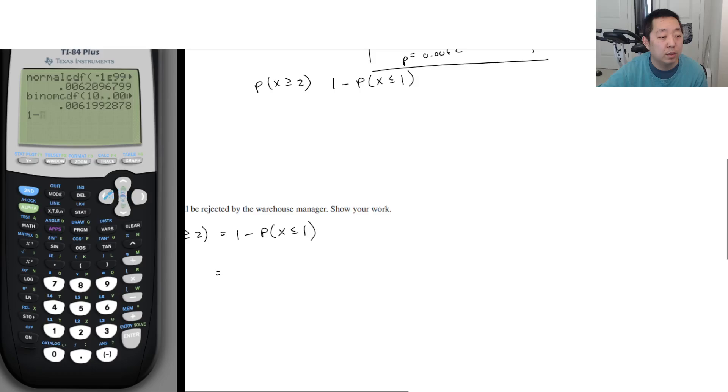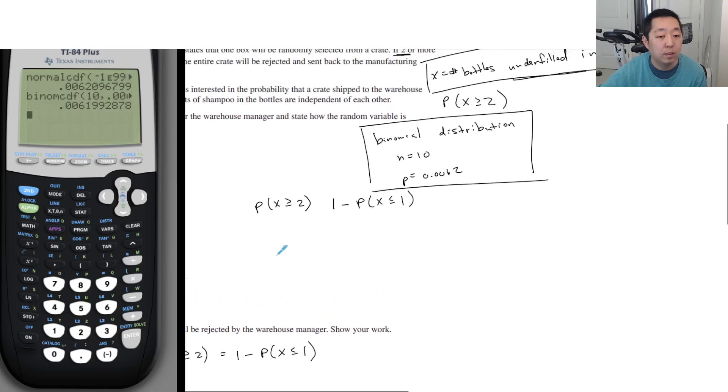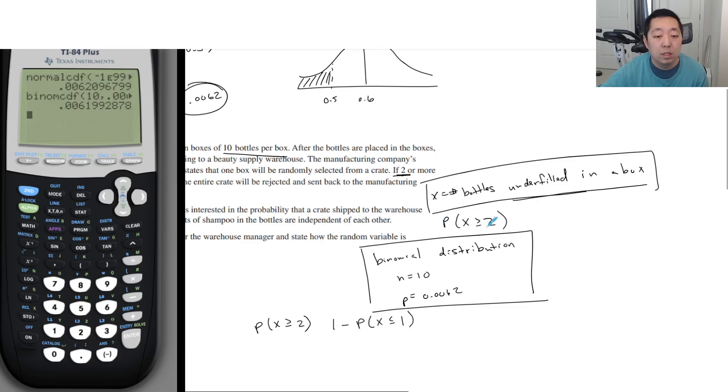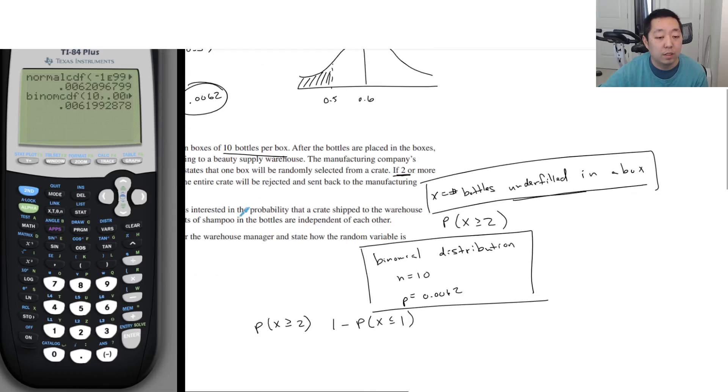Wait, no, I did that wrong. P is the number of boxes that are underfilled. Wait, why did that come out so small? It should be really large, very likely that it's zero. I do one minus that. I'm sorry, x is the number of bottles underfilled. 0.0062 is the probability that's underfilled. So yeah, let me look at that again. Did I do that right? 10 trials, x value. That's the probability of success. So maybe I should do... the probability that one is underfilled should be really small.